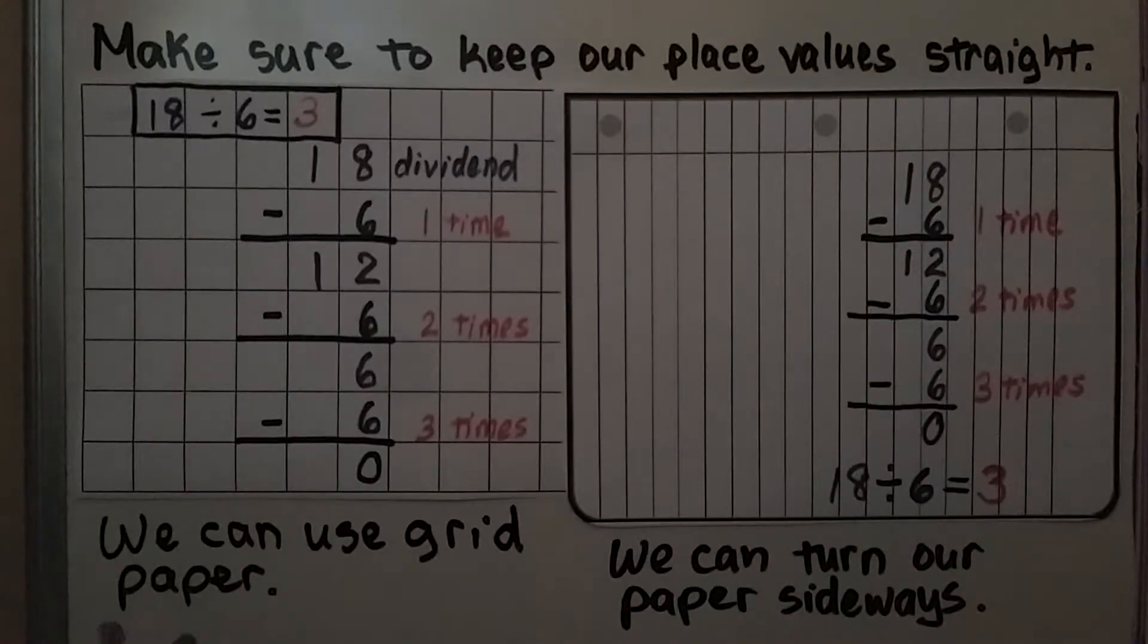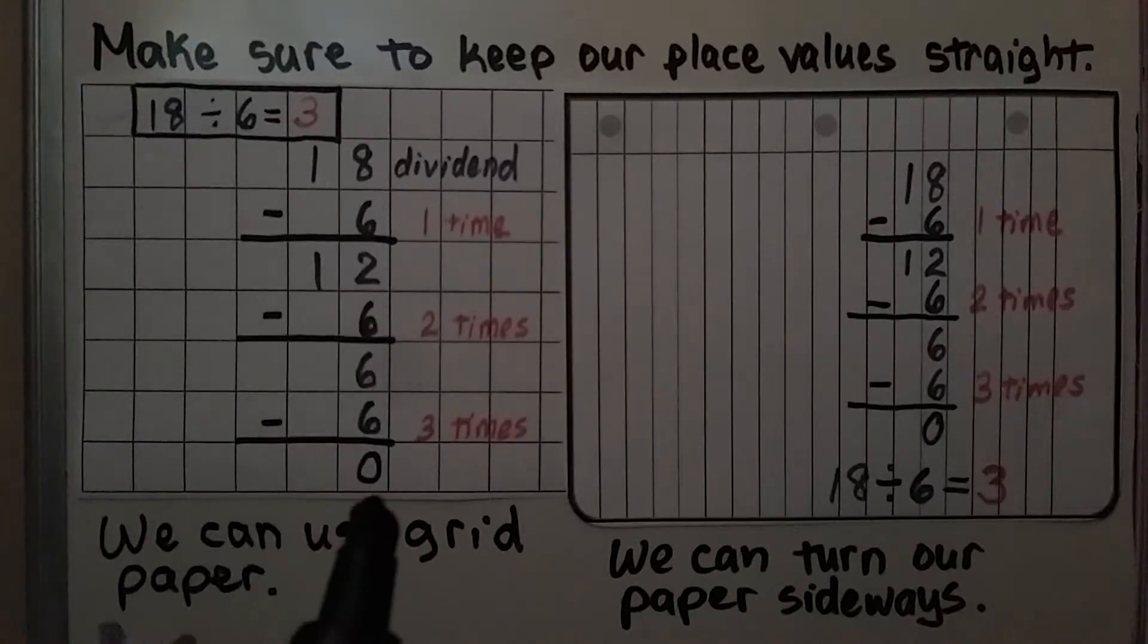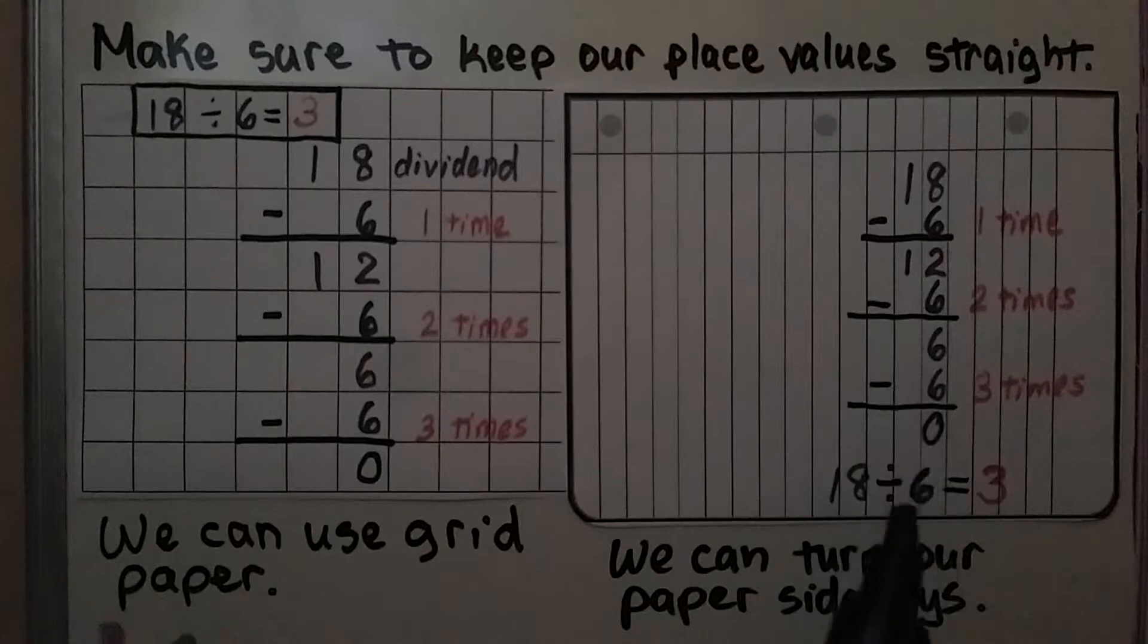When we do our repeated subtraction or division, we want to make sure we keep our place values straight. We can use grid paper and put one digit into each square. That'll keep it nice and straight. We can also turn our paper sideways, and then that way we've got straight lines to help us keep our place values straight.